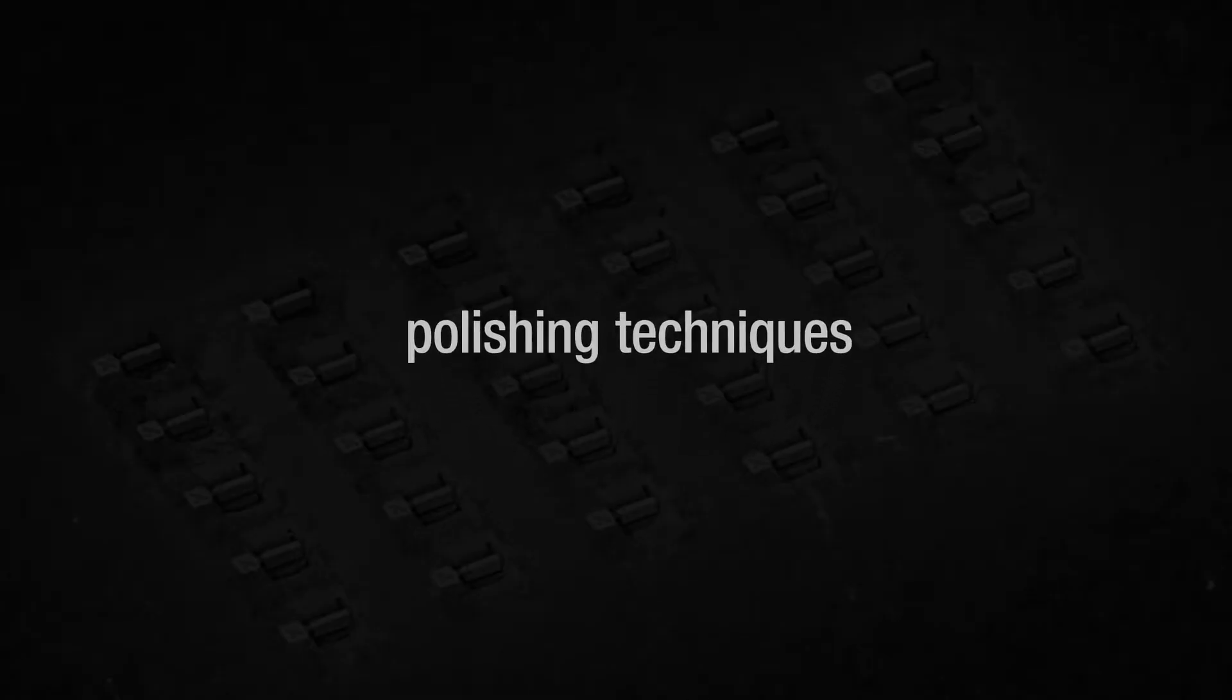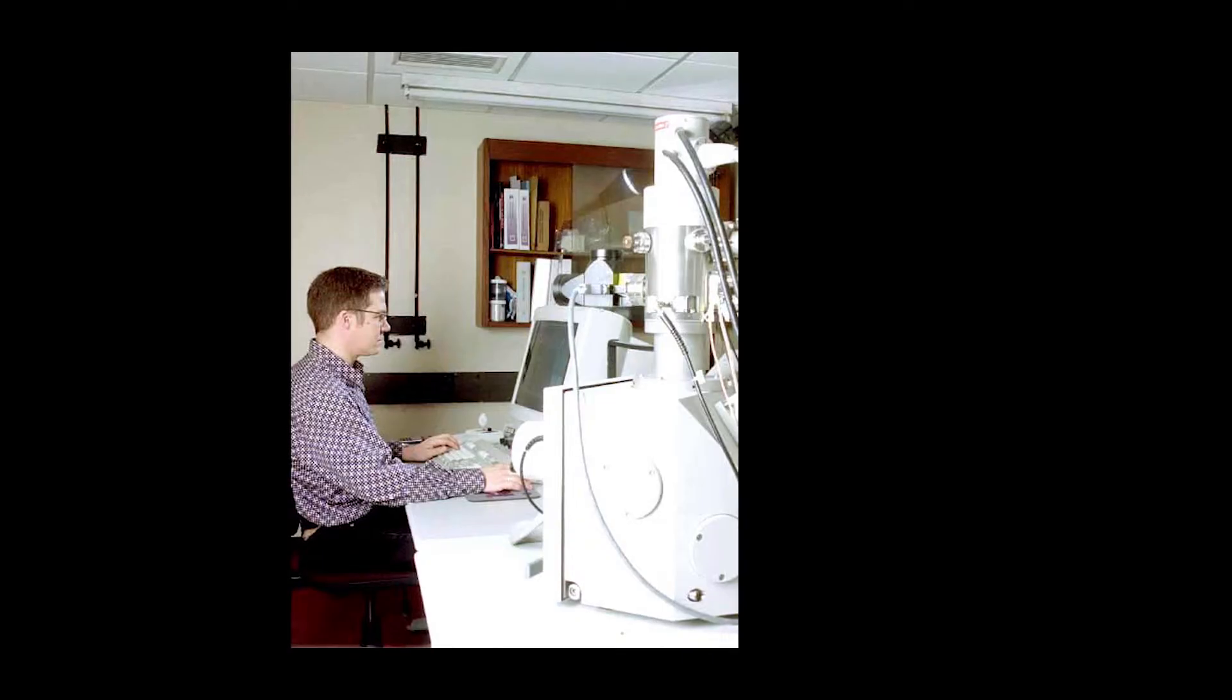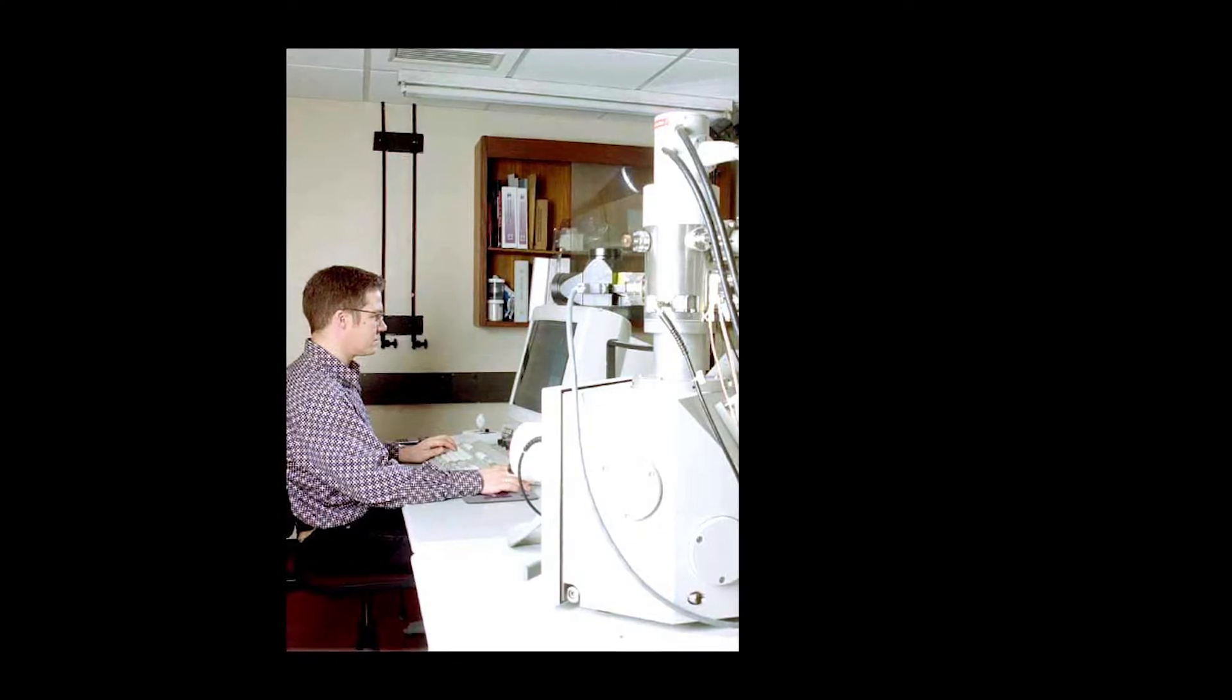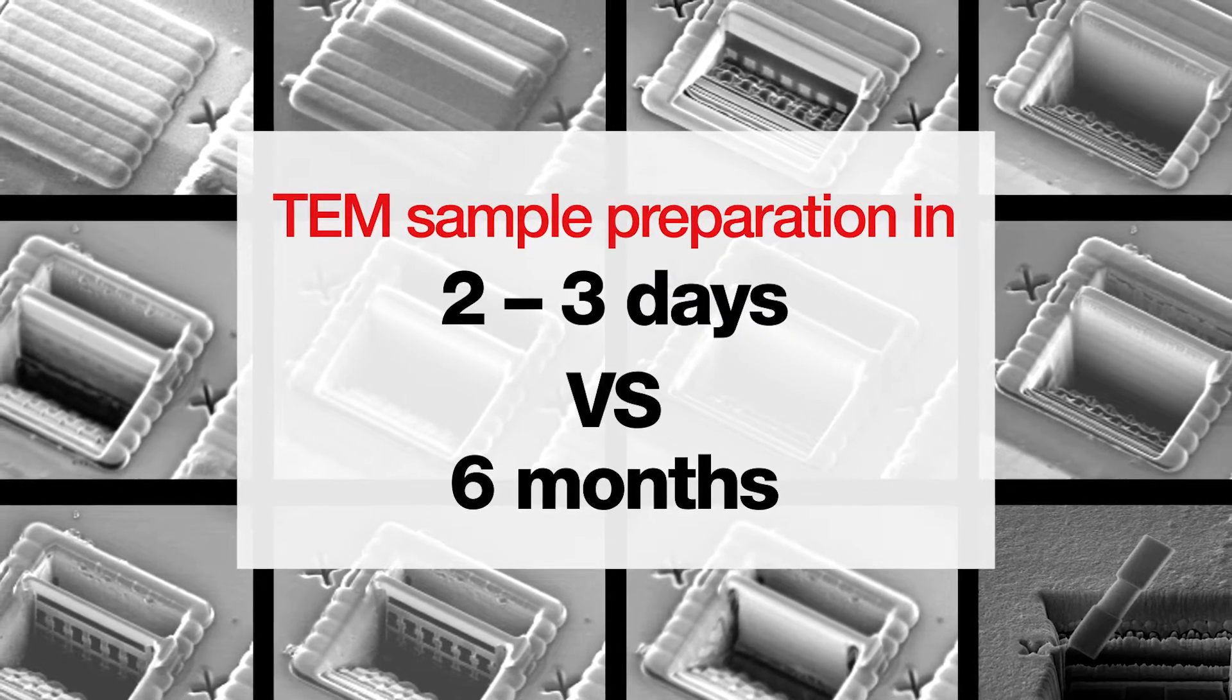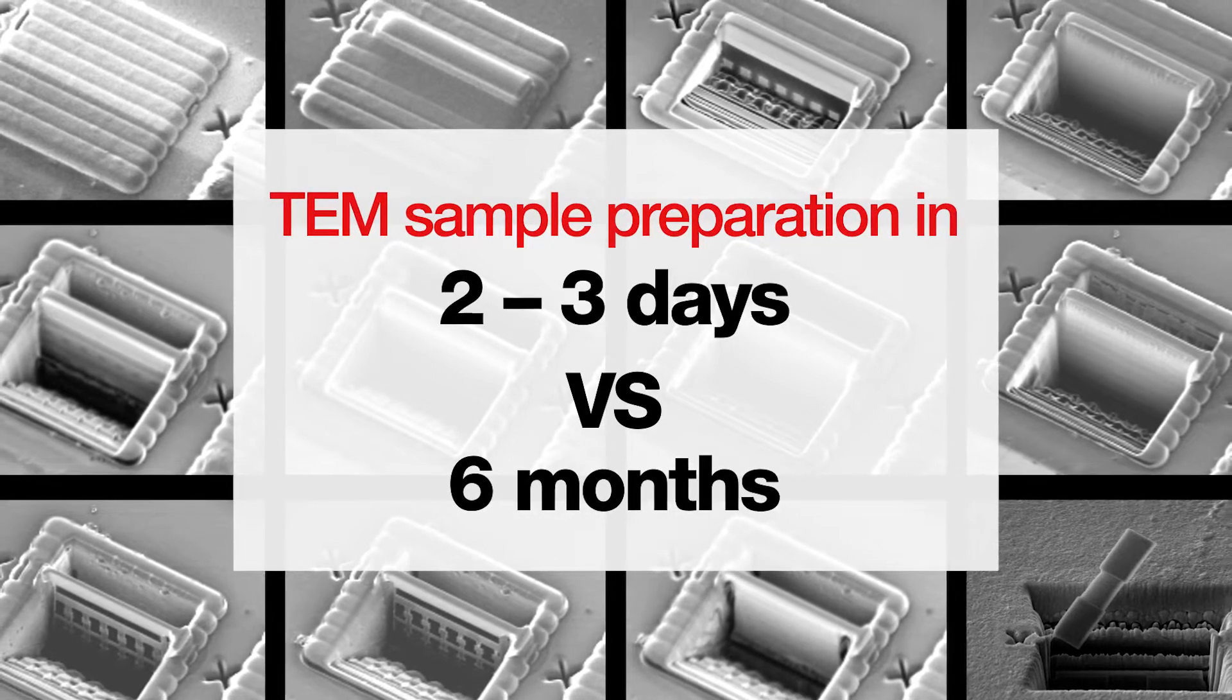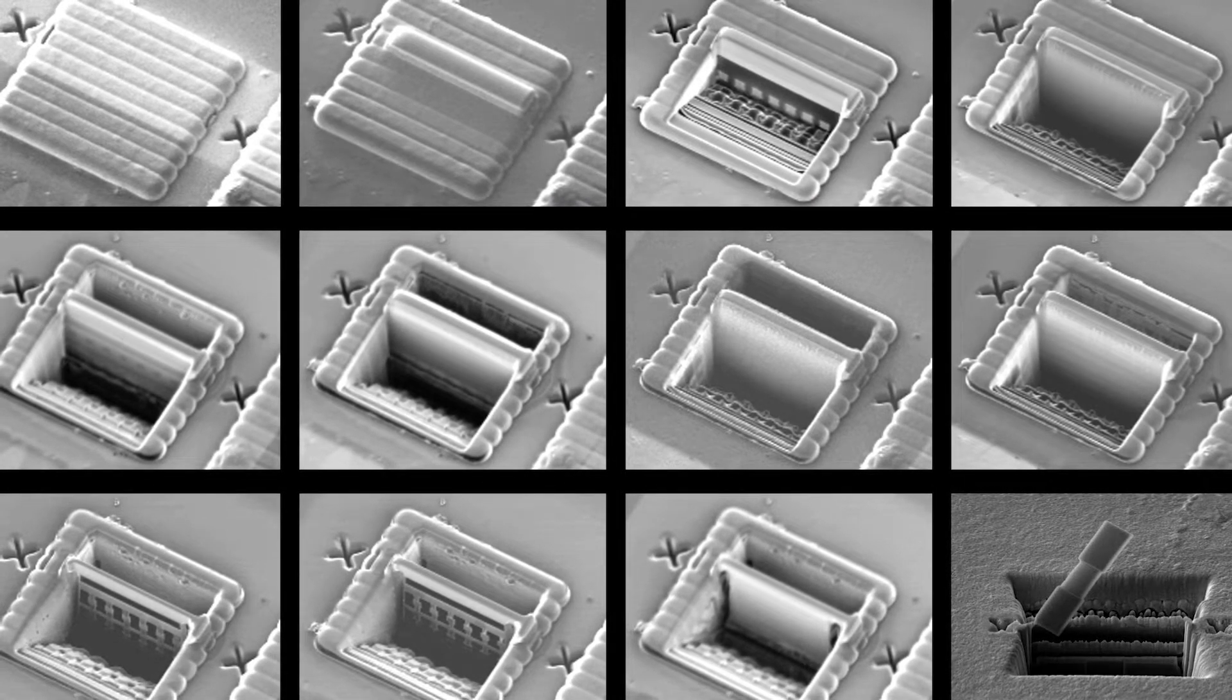Trying different polishing techniques, trying different ion beam thinning techniques at the time to try and get a little bit of electron transparent area to look at. When this FIB instrument first came in, I tried one of my samples to prepare it in that instrument. It took me probably the best part of two or three days, but it was just an enormous relief.